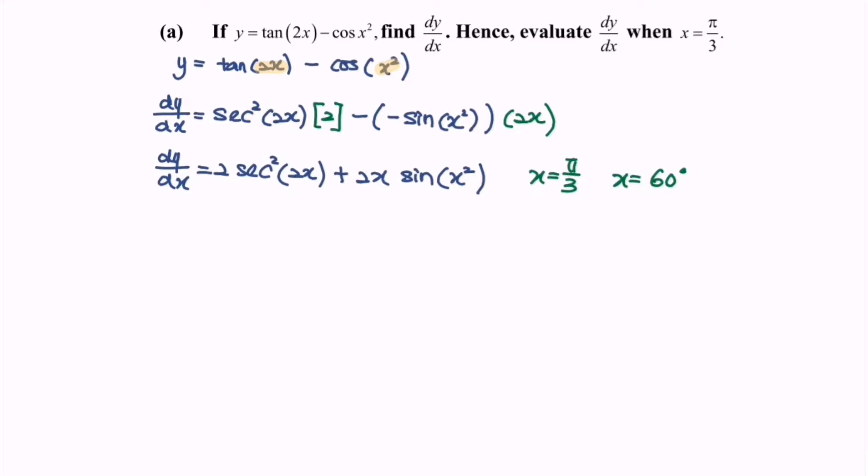So in here, dy/dx is equal to 2 over sec². Actually sec² is equal to cos, cos bracket with the angle 2x. So in here we will have 120 bracket square, plus we have 2 multiplied with π/3, and then we have sin bracket.